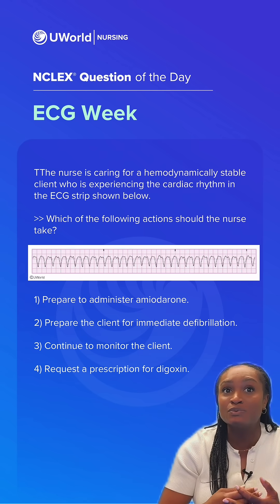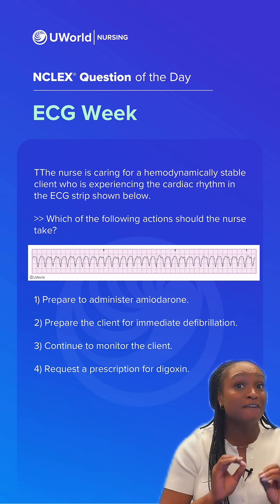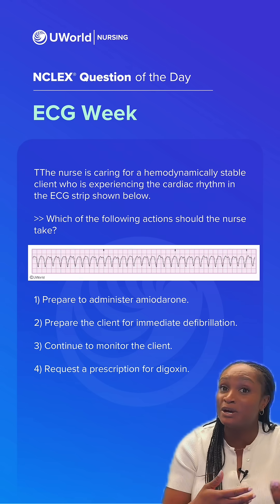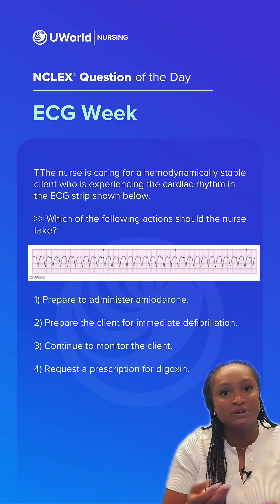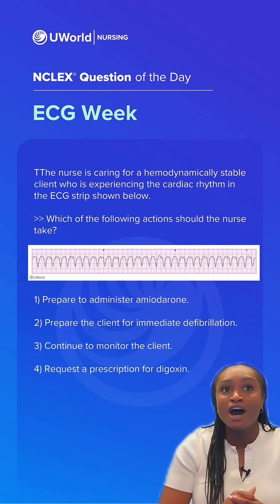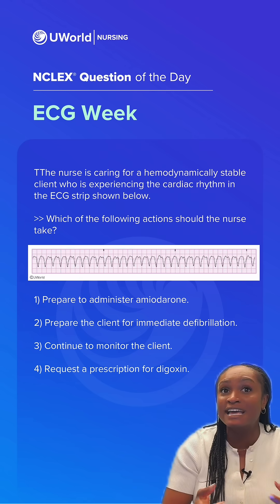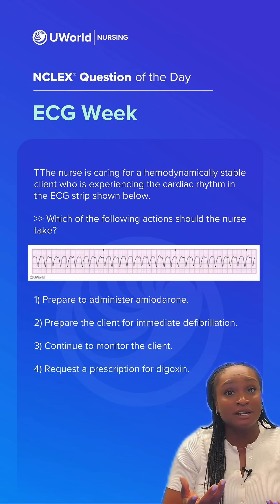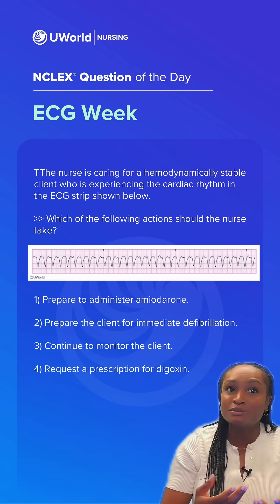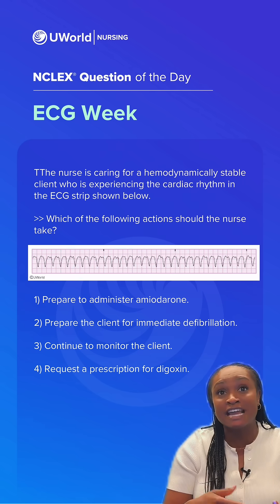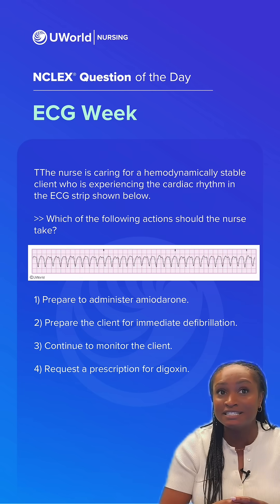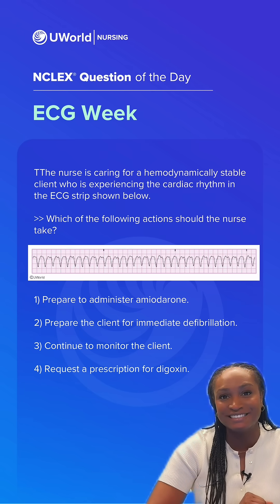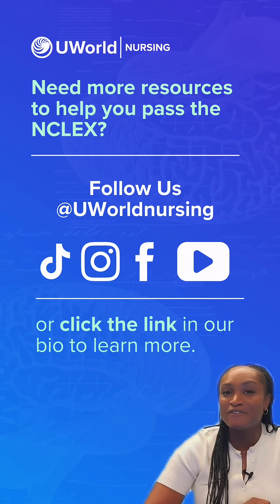Option two is incorrect because we only defib V-Fib or pulseless V-TAC. And since they're hemodynamically stable, we don't need to defib them at this moment. Option three is wrong because although the client is stable, the rhythm definitely still needs to be treated for what is causing it. And option four is incorrect because digoxin can actually cause this rhythm with digoxin toxicity. So again, the correct answer for this one is option one. Check the link in our bio for more information.